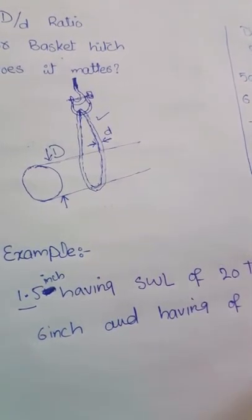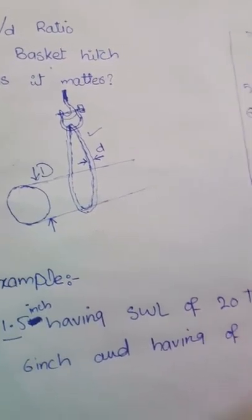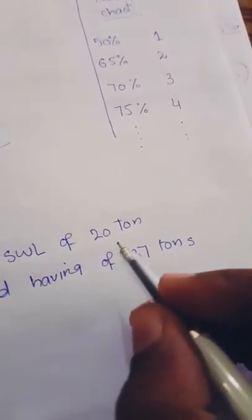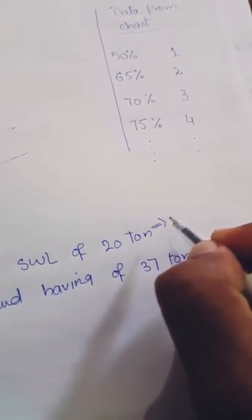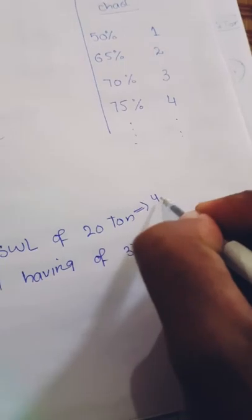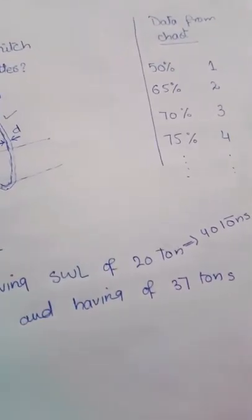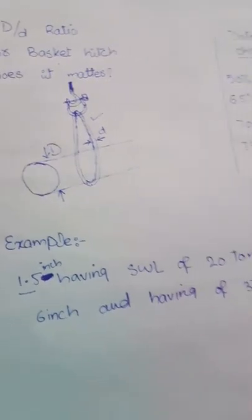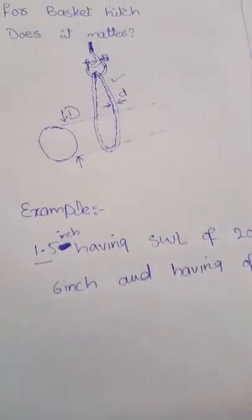The capacity of the sling is doubled in a basket hitch. As it is 20 tons, so for a basket hitch it is about 40 tons. For a basket hitch it doubled.